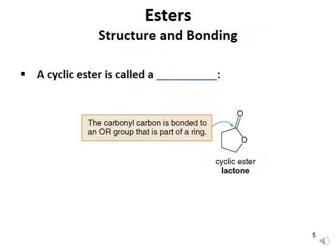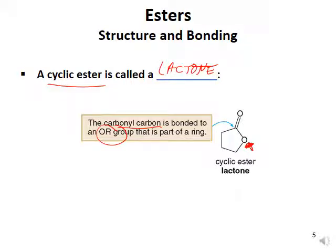You can also have cyclic structures. A lactone is a cyclic ester in which the carbonyl carbon is bonded to an OR group within a ring. It has some relation — not exactly but similar — to the cyclic acetals and semi-acetals we discussed earlier.